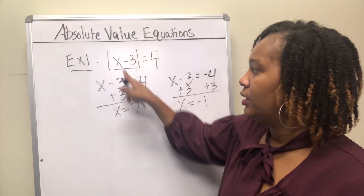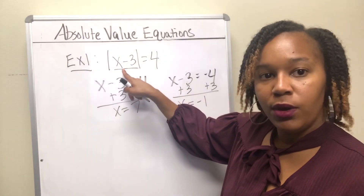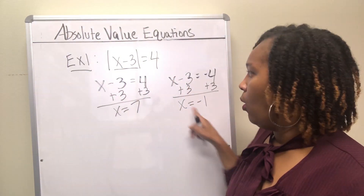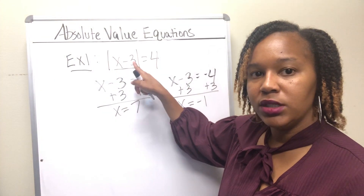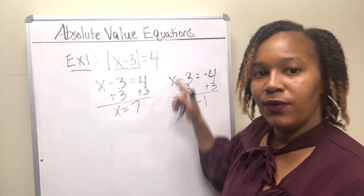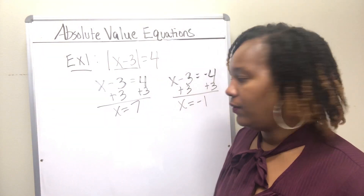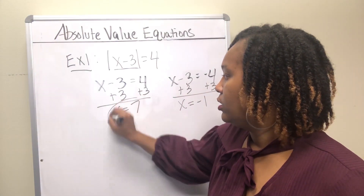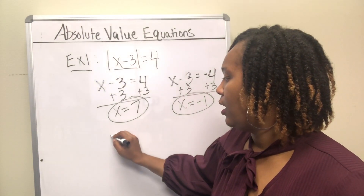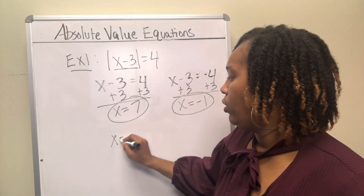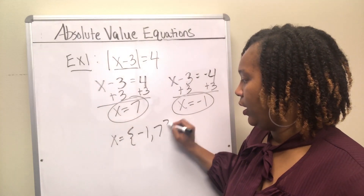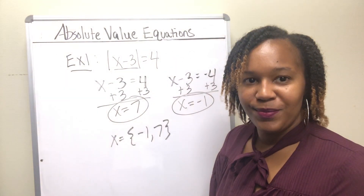You can plug it back in and check: 7 minus 3 is 4, and the absolute value of 4 is 4. Or plug in negative 1: negative 1 minus 3 is negative 4, and the absolute value of negative 4 is positive 4. So these are your two solutions. You can write them as x equals 7 and x equals negative 1, or in set builder notation with negative 1 and 7.